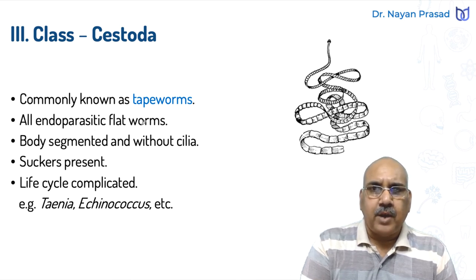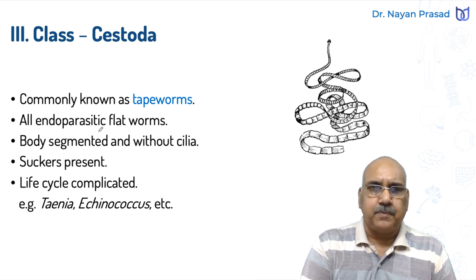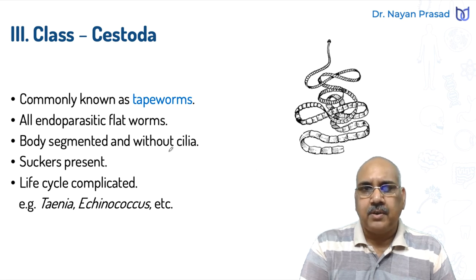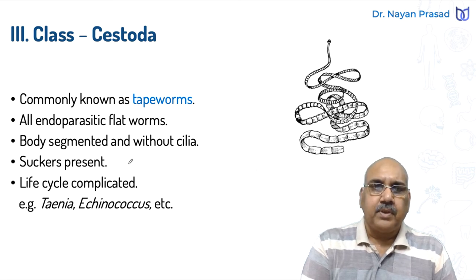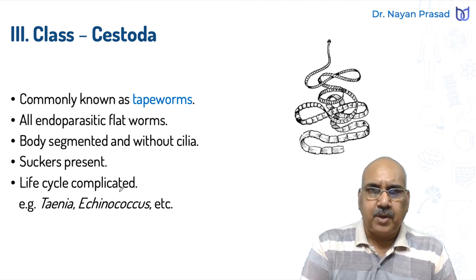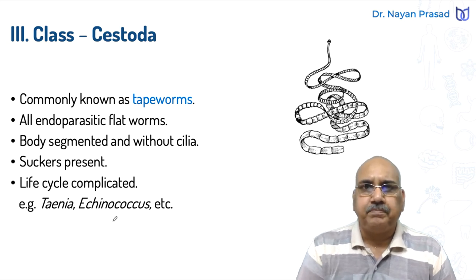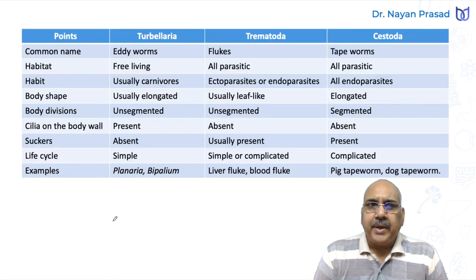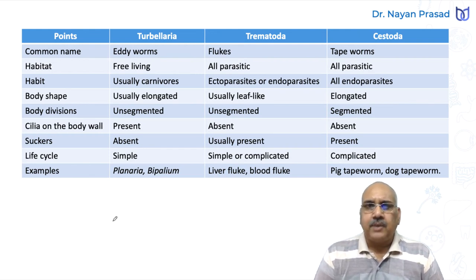These are all endo-parasitic flatworms - all are parasites, especially endoparasites found inside the body of the host. The body is segmented and without cilia, so in this group cilia is absent. Suckers are present and the life cycle is complicated - it may include more than one host. Examples: Taenia and Echinococcus.